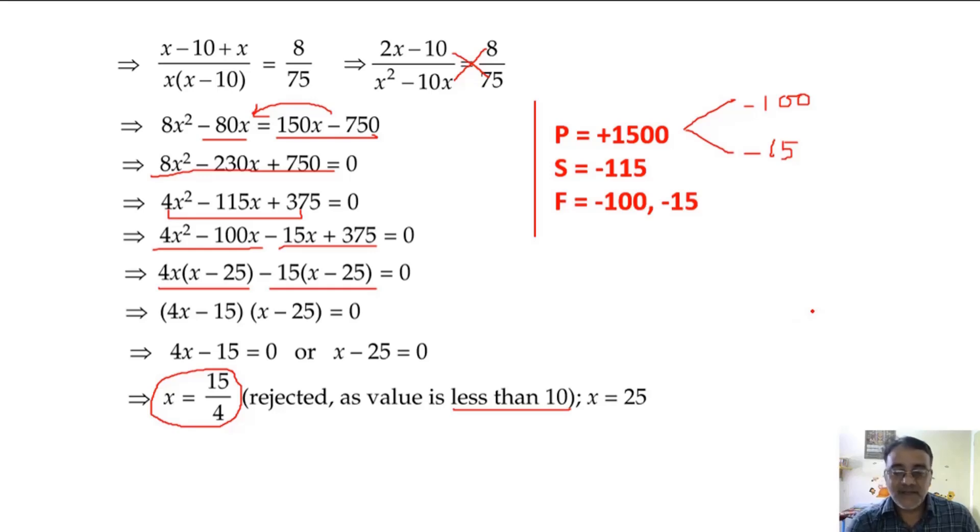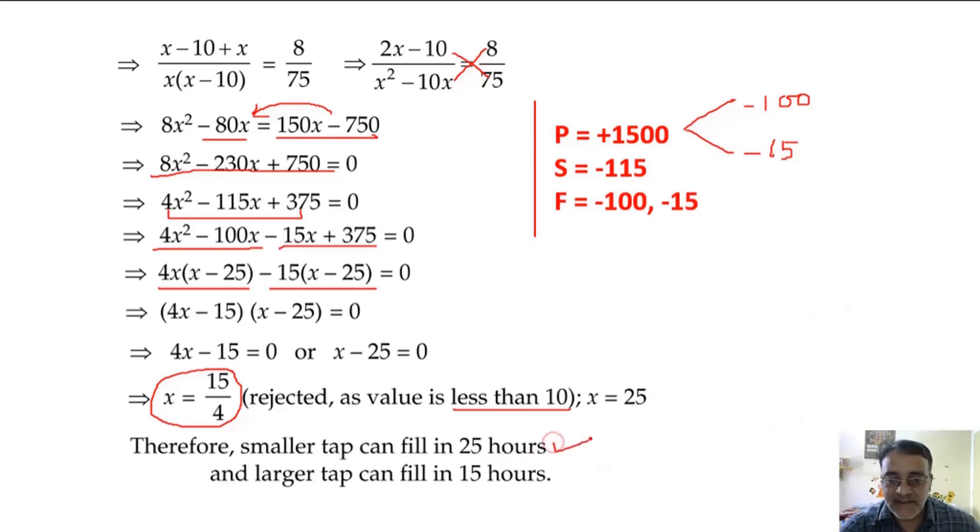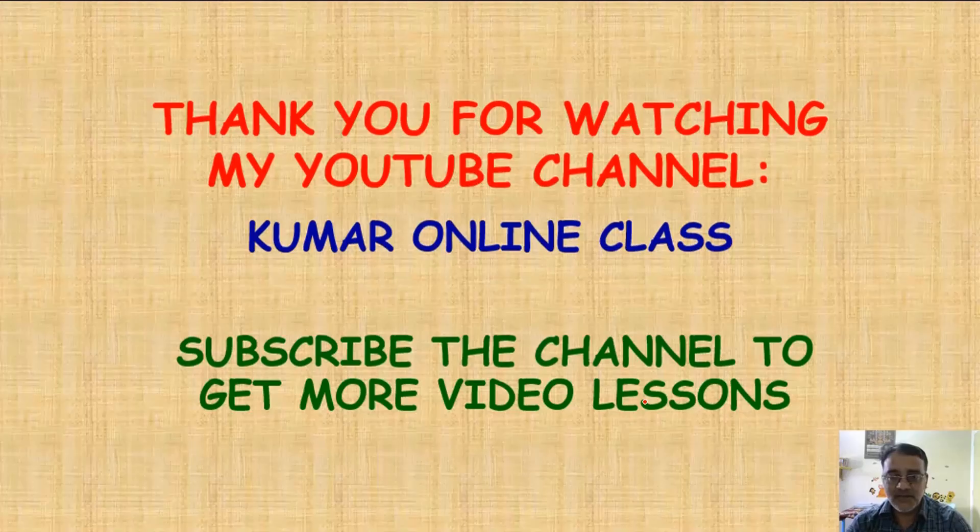Less than 10. Otherwise, when we do minus 10, we will get a negative value. Clear? Yes sir. The value of x should be greater than 10. Hence, the smaller tap can fill in 25 hours and the larger tap can fill in 15 hours. That's all for today's session. Thank you. Thank you very much.